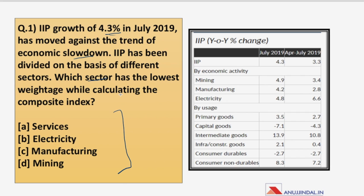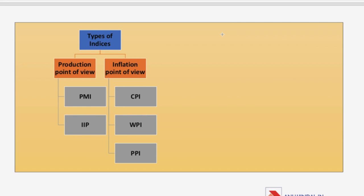Before answering, let us first understand the different types of indices, and then we'll move forward to understand what IIP is and on what basis it is differentiated. Here we are going to understand indices based on the production point of view and the inflation point of view — a list of five indices, discussing what each calculates and who publishes them.